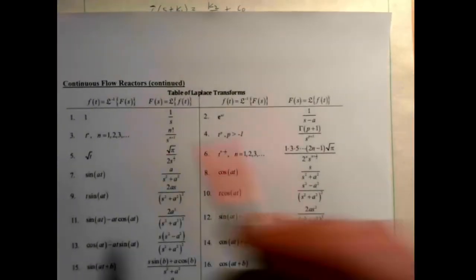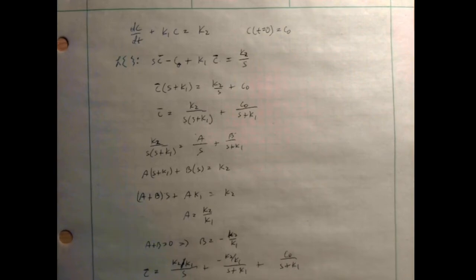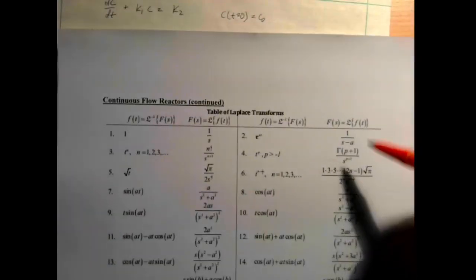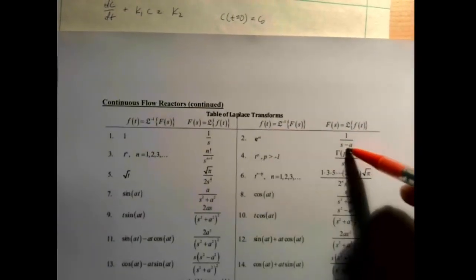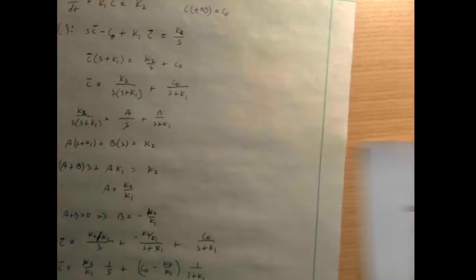Taking the inverse Laplace transform: the inverse of 1/s is just 1, so the first term gives K2/K1. The inverse of 1/(s+K1) — from the table with a = −K1 — gives e^(−K1·t). So the full solution is C(t) = K2/K1 + (C0 − K2/K1)·e^(−K1·t).